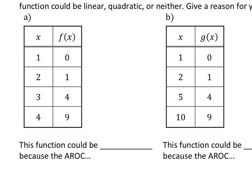For this first interval, I'll use red. If I'm finding the average rate of change here, it would be 1 minus 0 on bottom over 2 minus 1 on top — outputs on top, inputs on bottom. That equals 1. Let's go for the next interval: 3 minus 2 on bottom and 4 minus 1 on top because my outputs go on top, my inputs go on bottom. 4 minus 1 is 3, 3 minus 2 is 1, so that's 3.